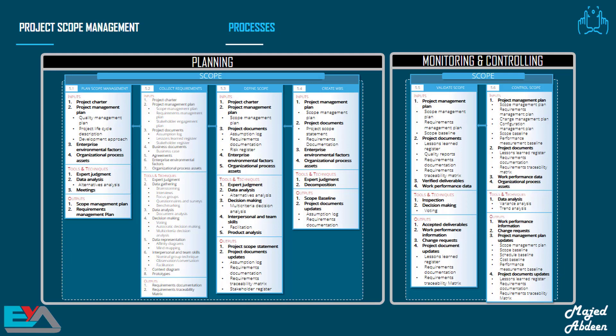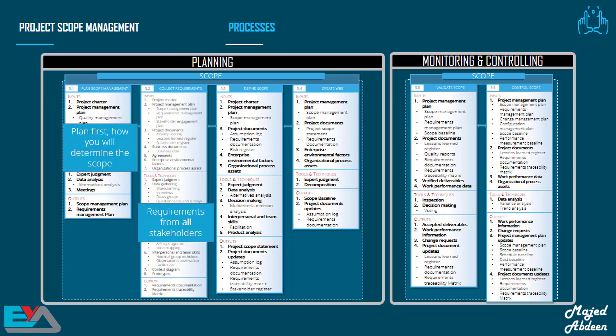In Scope Management, we have 6 processes, of which 4 processes take place during the Planning process group, and 2 processes take place during the Monitoring and Controlling process group. When you get to the exam, remember these points. First, you must plan how you'll define the scope of your project. You also have to plan how you'll manage and control the scope — that means you will plan how to execute all the other processes. This is part of your Scope Management plan, and this concept is implemented in all the other knowledge areas.